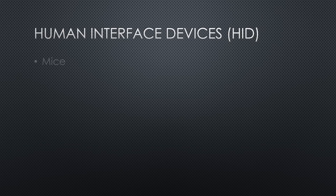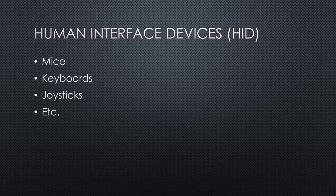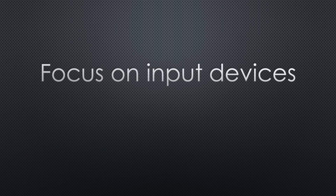In PC lingo, mice, keyboards and similar devices are called Human Interface Devices, short HID. They either input or output data from and to humans.